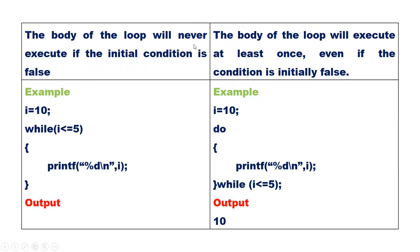In the case of while loop, the body of the loop will never execute if the initial condition is false. For example, if the value of i is initialized to 10 and the condition is i less than or equal to 5, the condition is false initially. The control will never enter into the loop body, so we will get no output.